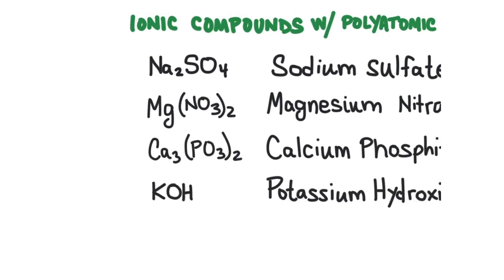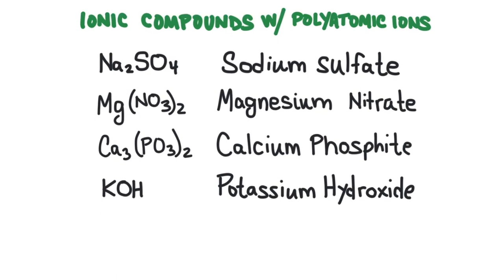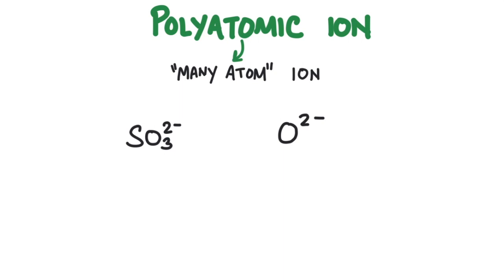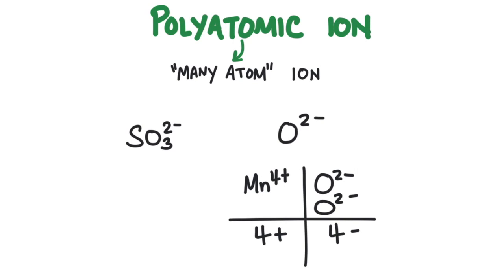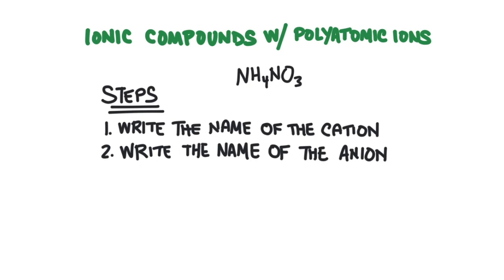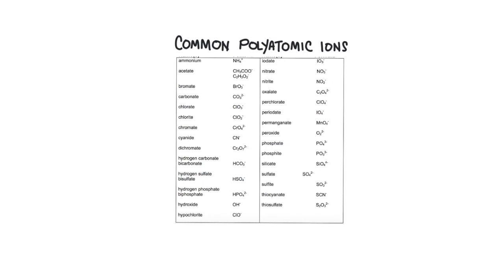Sometimes ionic compounds will contain polyatomic ions. These are not binary ionic compounds because there are more than 2 types of elements — they are literally multiple atoms bonded together that have an overall charge. For example, SO3²⁻ is a group of 1 sulfur and 3 oxygen atoms bonded together with an overall 2− charge, which works the same way as an oxide ion, which also has a 2− charge. To name ionic compounds with polyatomic ions: number one, write the name of the cation; number two, write the name of the anion — no need to change the ending. You will have to learn a list of common polyatomic ions, included as an attachment to this lesson.